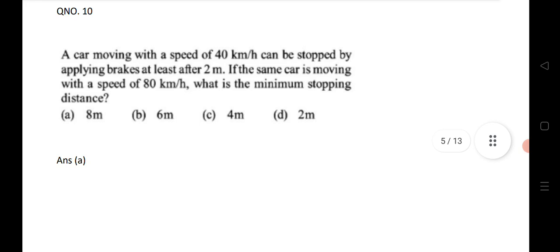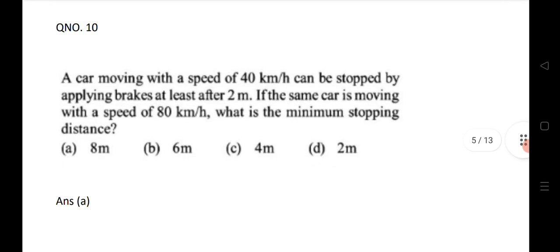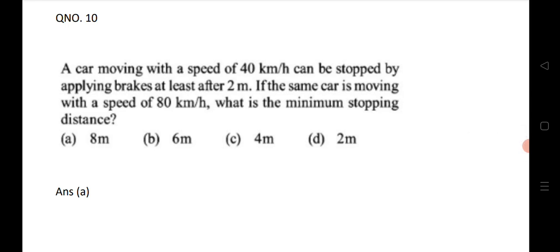Tenth question: a car moving at 40 km/h can be stopped by brakes after traveling 2 meters. If the same car moves at 80 km/h, what is the stopping distance? Remember: when speed doubles, the stopping distance increases by a factor of four. So multiply the first distance by 4: 4 × 2 = 8 meters. This is an easy and very important formula.